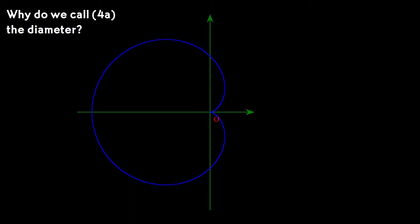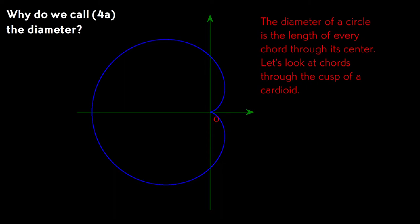This formula now can give us some insight into why we chose to call 4A the diameter. Remember that every chord through the center of a circle is the diameter of the circle, and all the chords are of equal length. Let's look at how the chords are at the cusp of a cardioid. They certainly look equal.